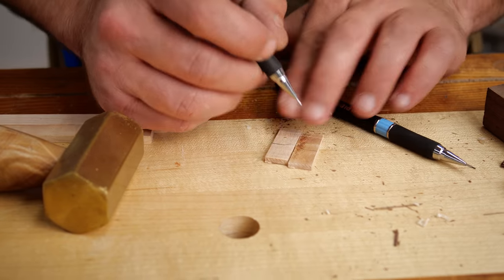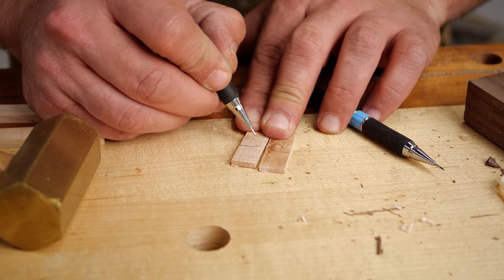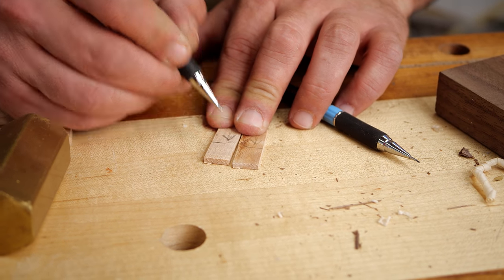So now we have our wedges, make sure you label them which way is up because otherwise you're going to forget and put one in backwards and mess up your whole joint. Now let's glue it up.